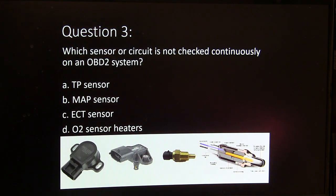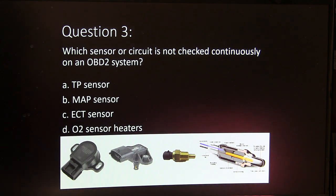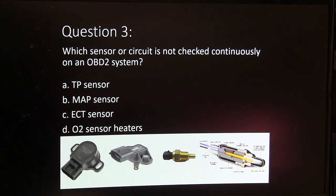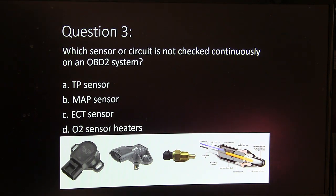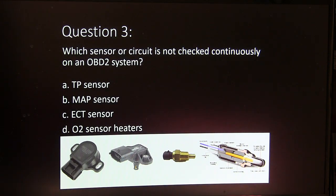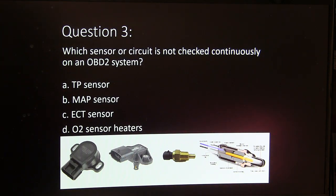Question 3. Which sensor or circuit is not checked continuously on an OBD2 system? A, TP sensor. B, MAP sensor. C, ECT sensor. Or D, O2 sensor heaters.